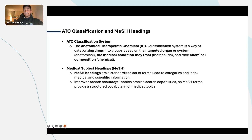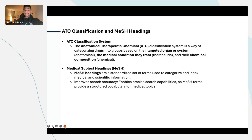The second concept is MeSH headings — Medical Subject Headings. Think of it as a dictionary developed just for the pharma domain, medicines, and all the indications. It's characterized with different disease categories in a different hierarchy. These two concepts are really important — they help us improve search accuracy and the way we serve our users.